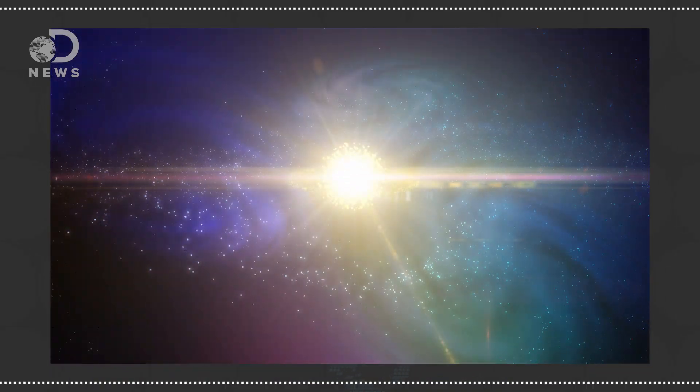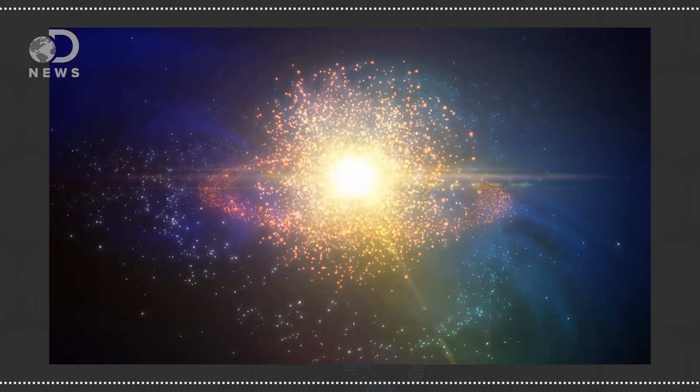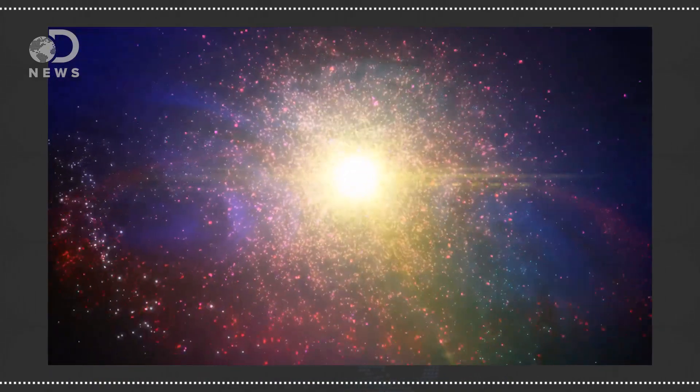New research in the Proceedings of the National Academy of Sciences used other solar systems as a model for our own. Our solar system was formed from leftovers after the Big Bang. Gas and dust coalesced into planets over many millions of years.